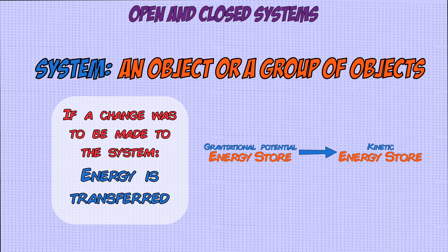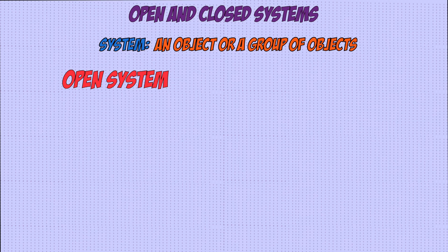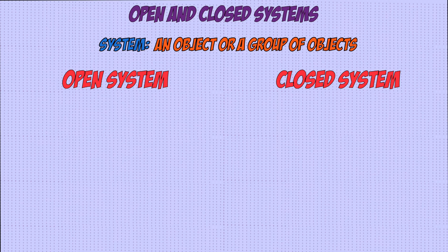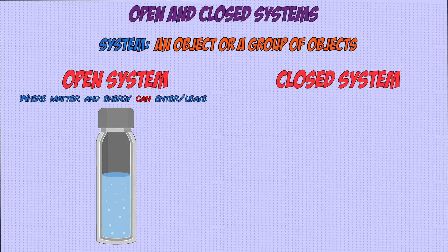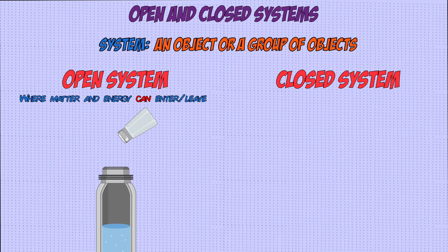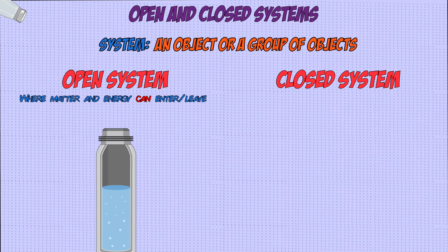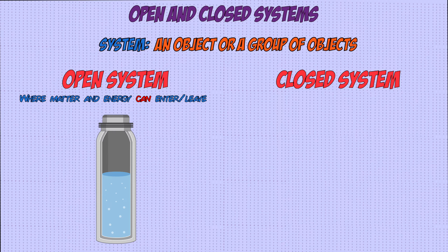You can have two types of systems: open systems and closed systems. An open system is one where matter and energy can enter and leave. For example, if we had a flask of hot water with the lid open, you can add matter by adding salt to the water, and you can also add or remove energy — so if you were to let the water cool, heat energy will leave the system.